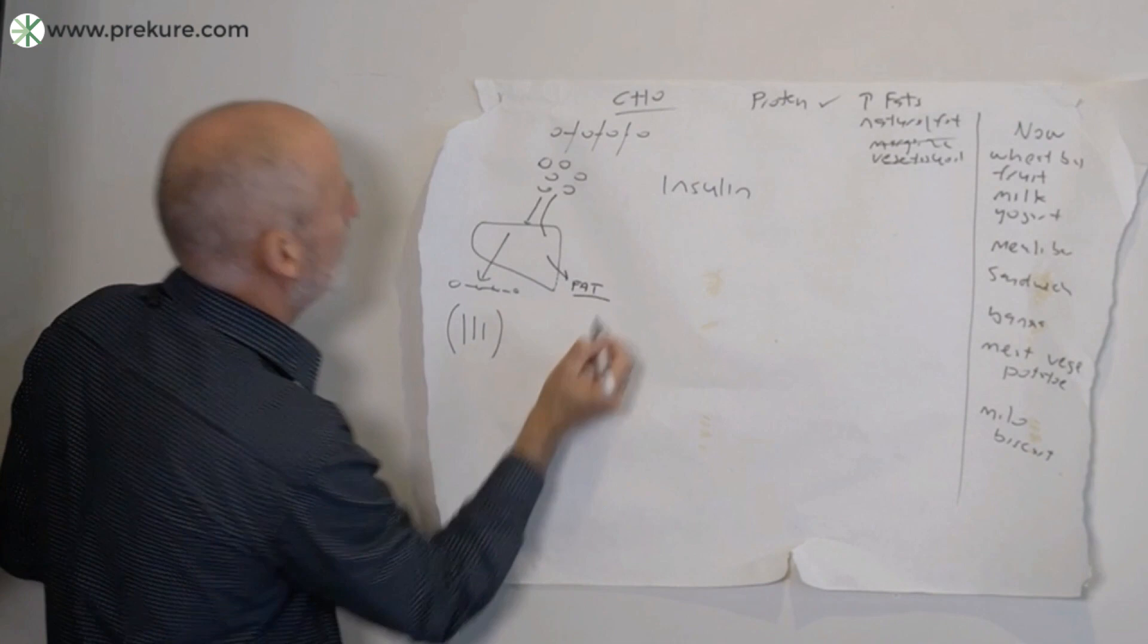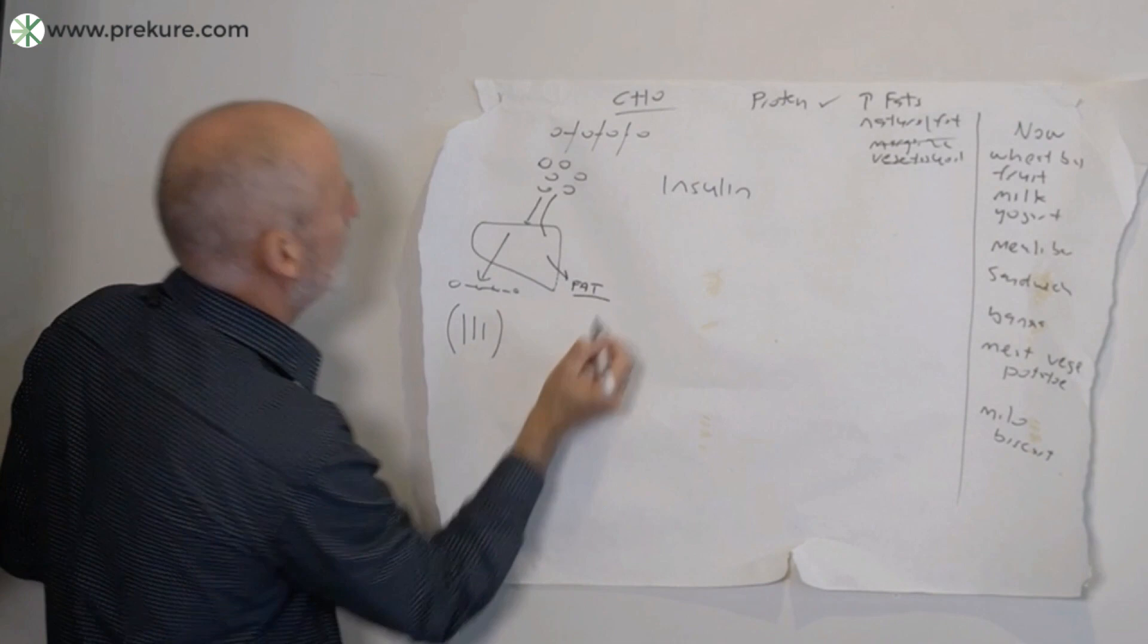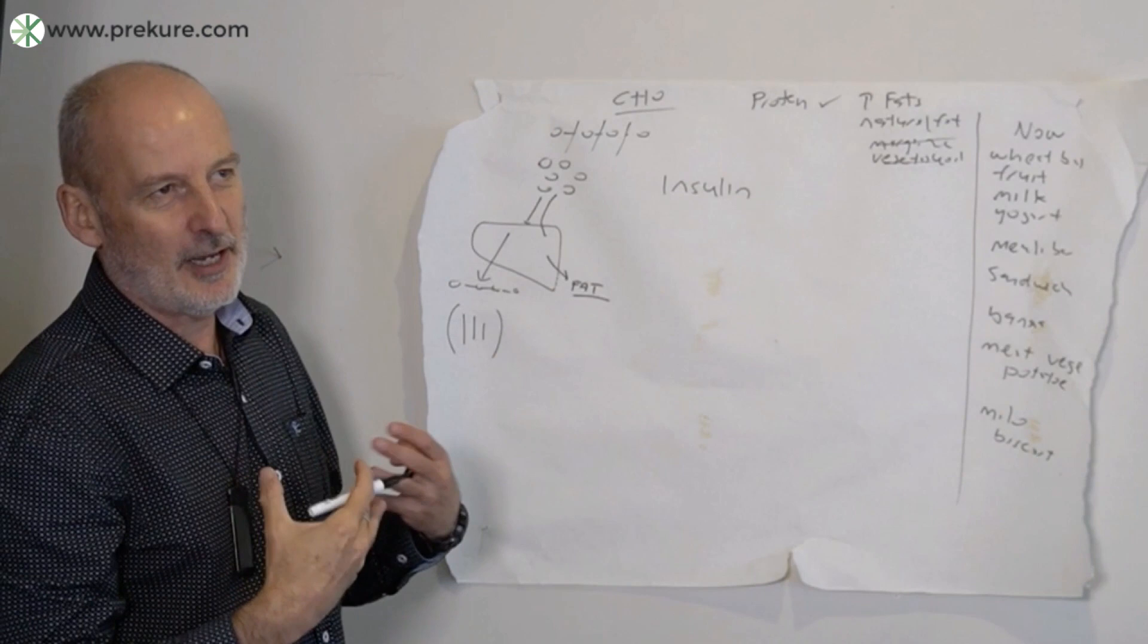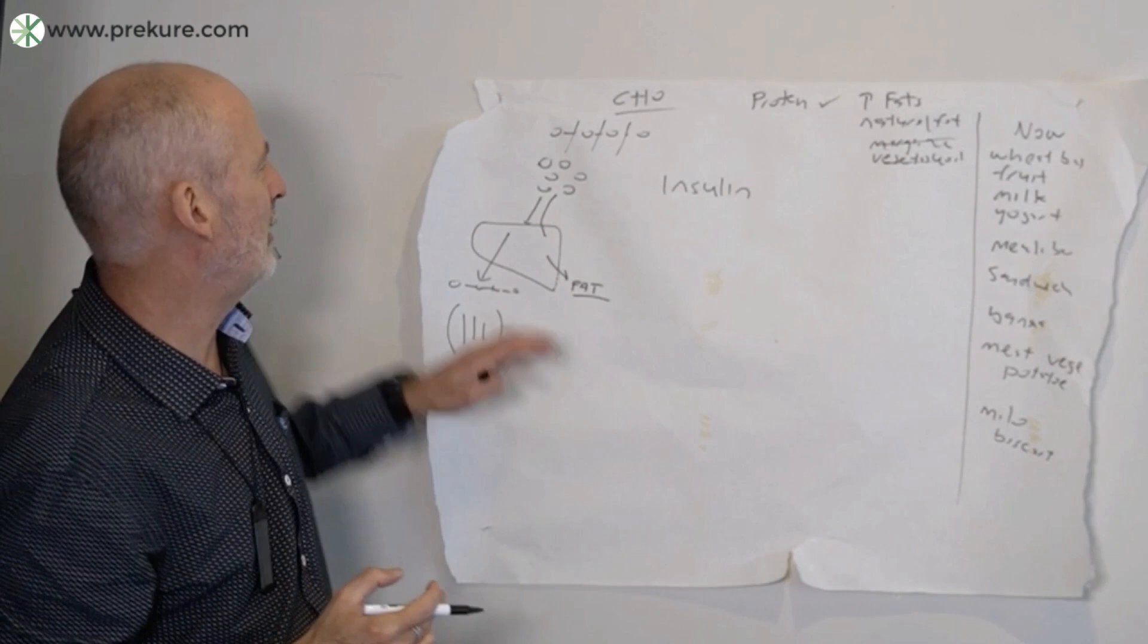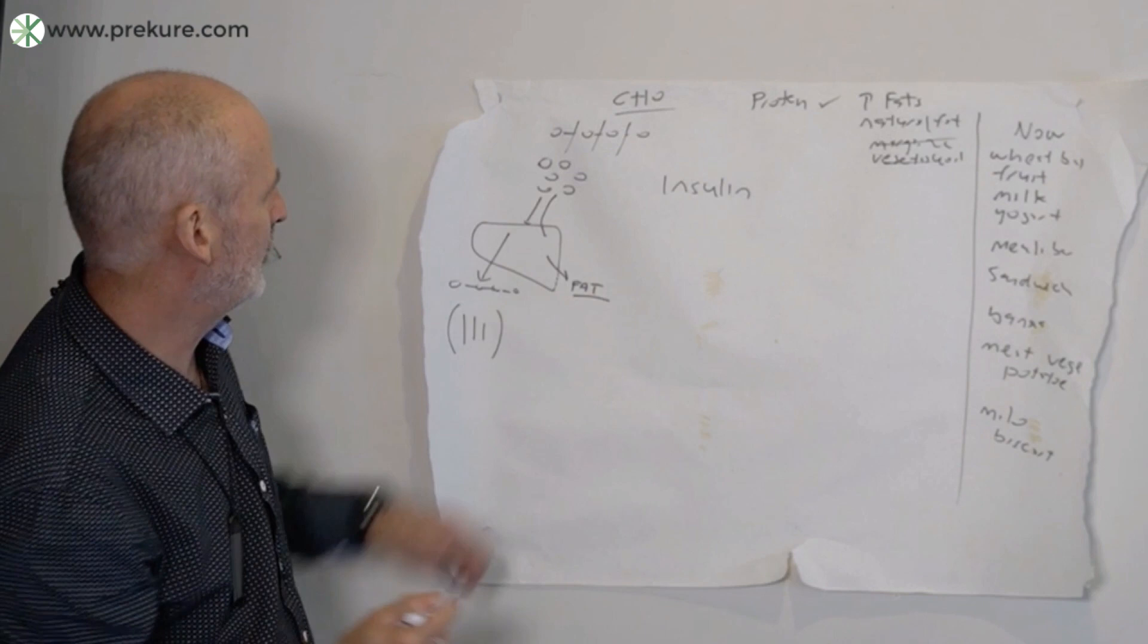And what happens is that extra carbohydrate is turned into fat, and this process is called de novo lipogenesis. So that means de novo means within the body, and lipo means fat, and genesis means to make. So de novo lipogenesis, the manufacture of new fat. And that's the problem because that fat has to go somewhere.